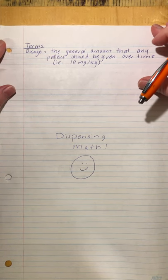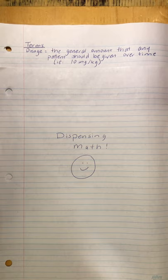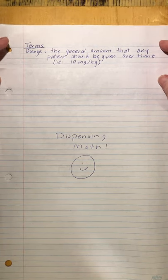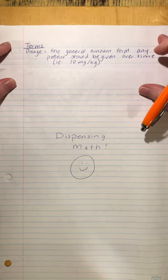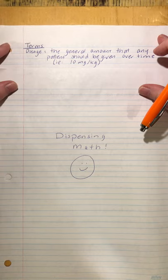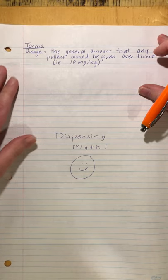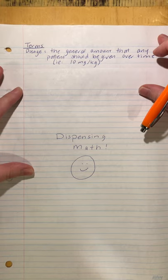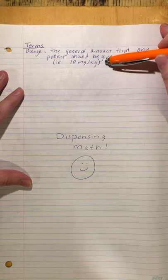The first term is dosage. The dosage is the general amount that any patient should be given over time. Dosages are usually given as an amount in milligrams per kilogram, sometimes milligrams per pound, though we typically talk in kilograms for medical math. So 10 milligrams per kilogram — that's a dosage, a general amount for any patient, and we can use it to calculate how much to actually give the patient.